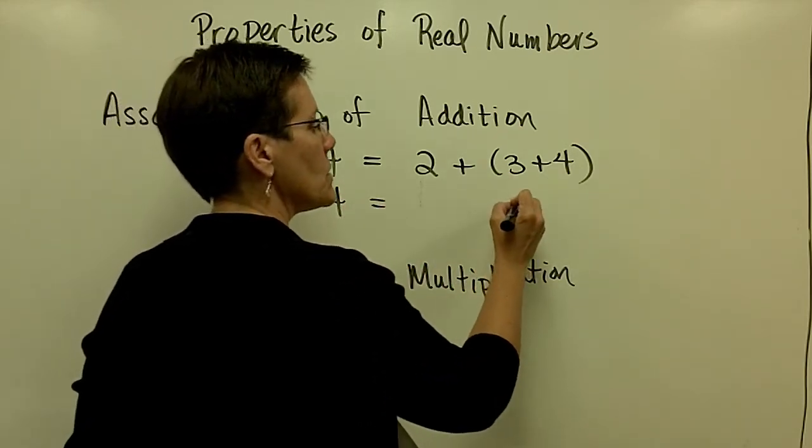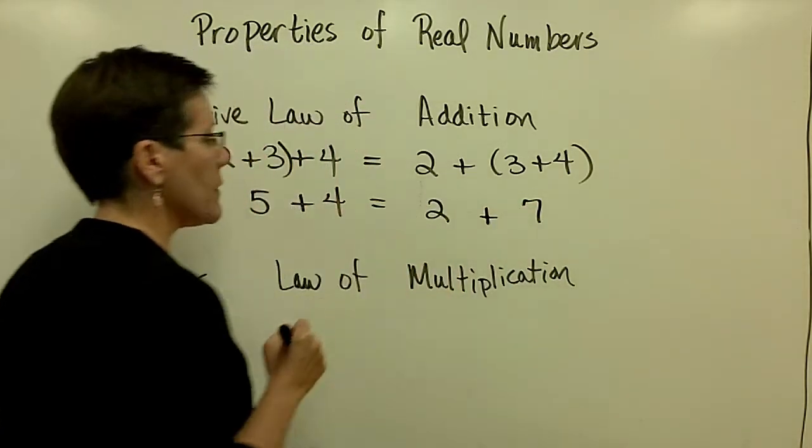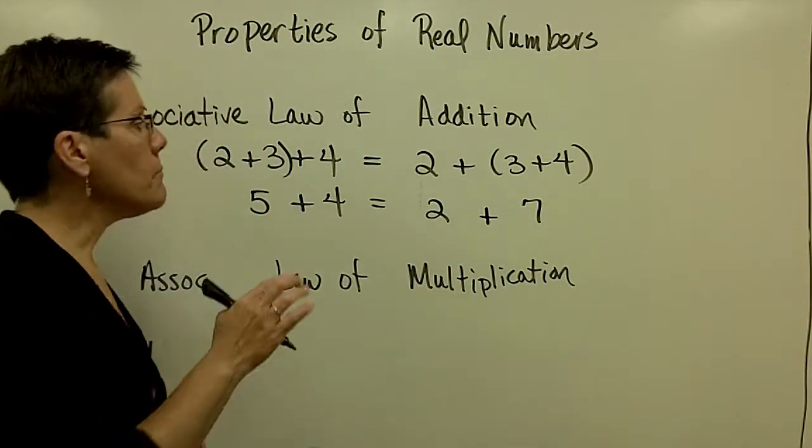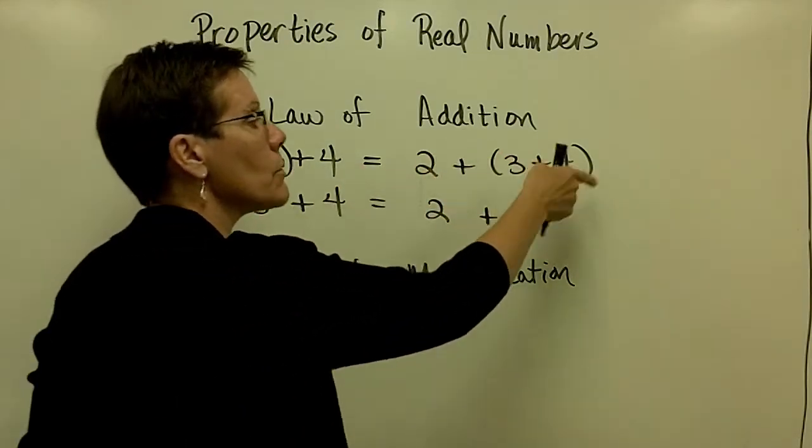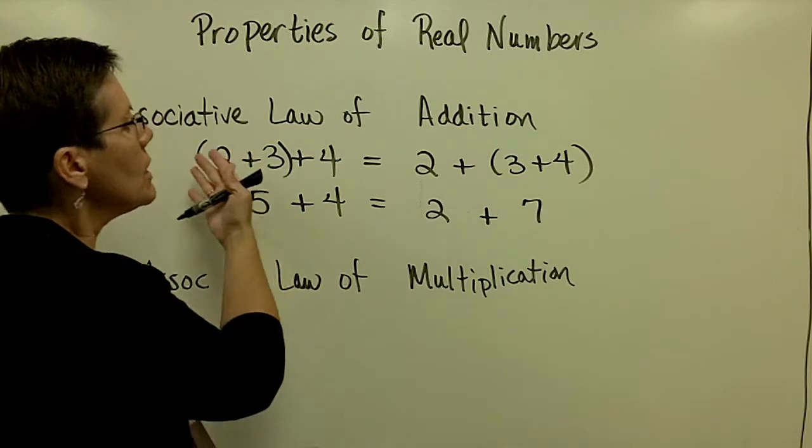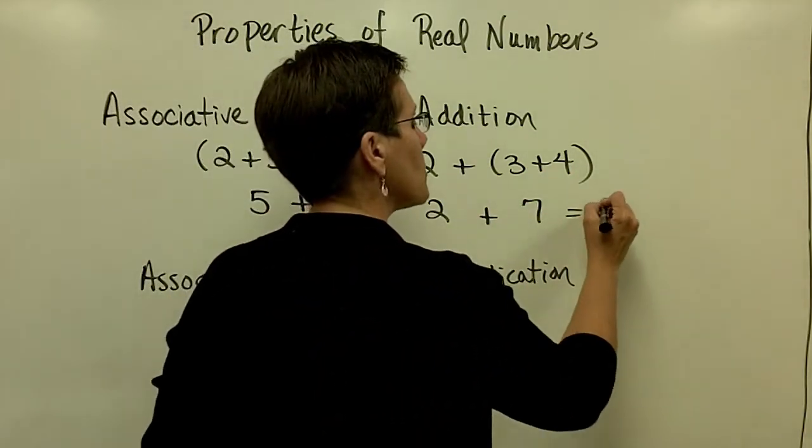Over here, order of operations says that I should add the 3 and the 4 first and get a 7, and then add this 2. But either way, the associative law says the grouping symbols can be around any variety of groups, given that you have the same terms that are being added together, and you'll still get the same results.